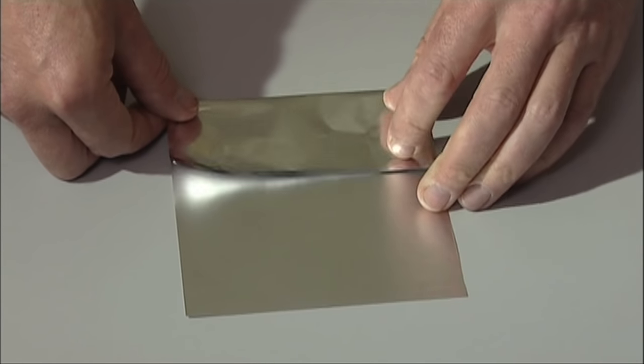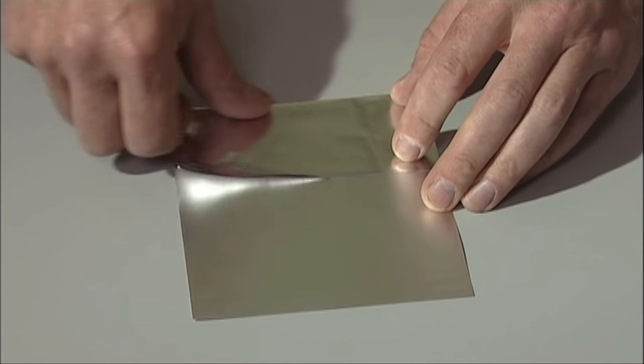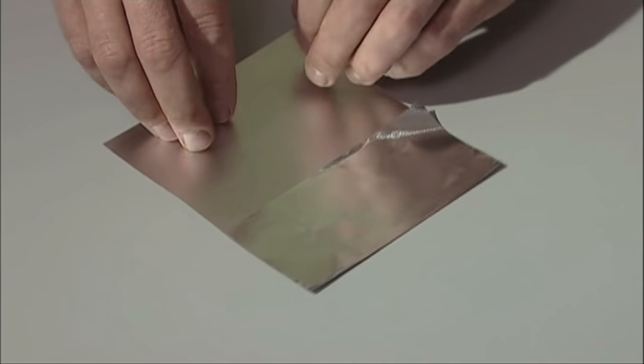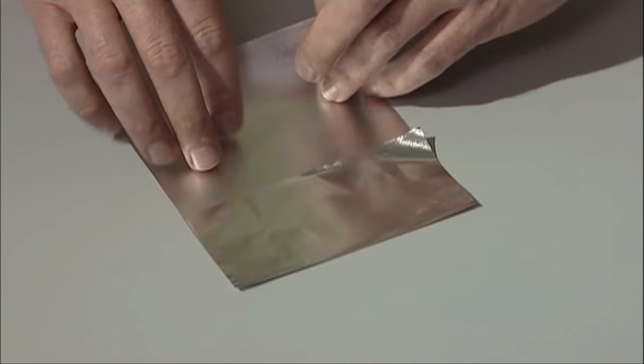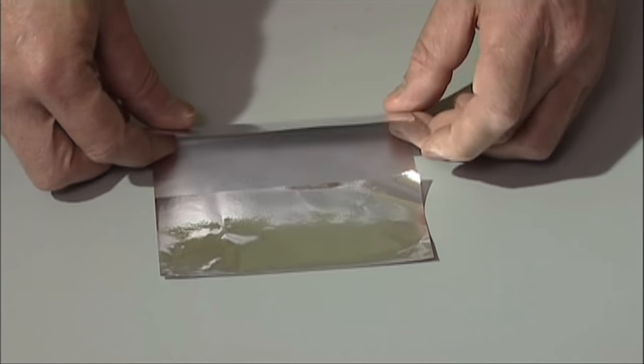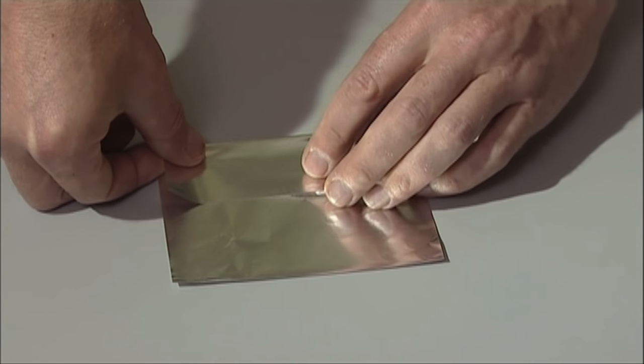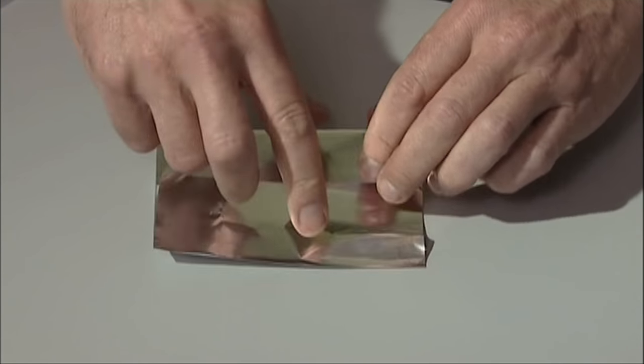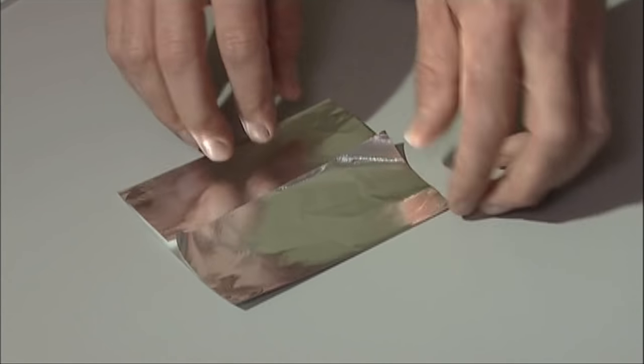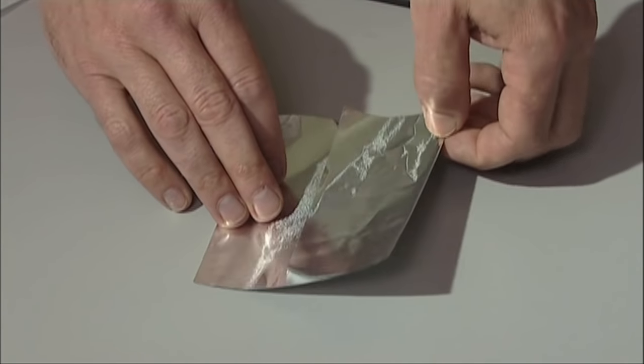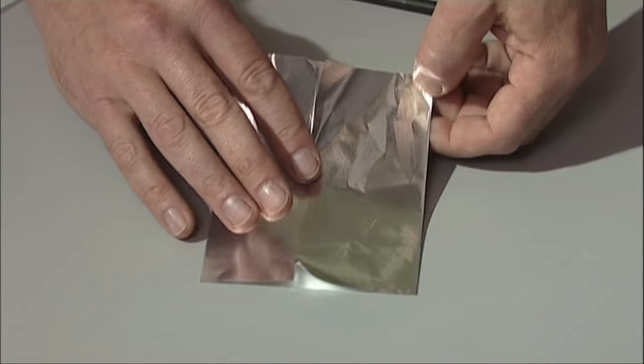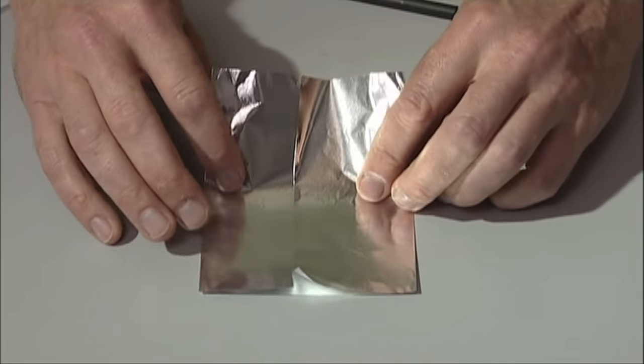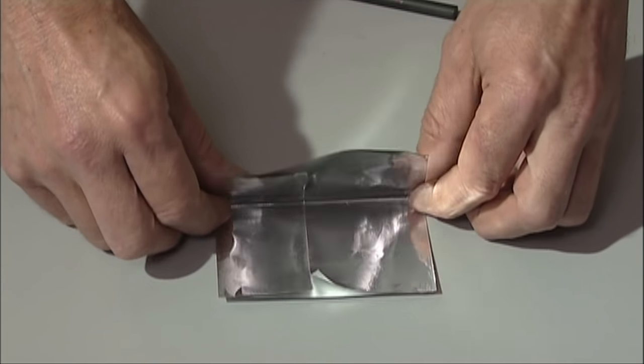So we fold, first fold somewhere close to the middle, and then the second fold just meets the foil in the middle there. Now we turn that around and keeping those two edges on the inside, we fold it right down the middle.